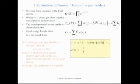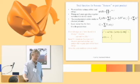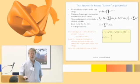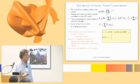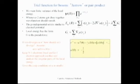Let me talk about a trial function for the bosonic part. Electrons are fermions — they have to be anti-symmetric. Bosons, like the Higgs boson, have a symmetric wave function. Monte Carlo really likes bosons because the wave function can be made positive and there's no sign problem. We'll get to that later. This is the wave function McMillan used for helium — it's called the Jastrow or pair product wave function.